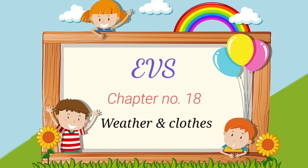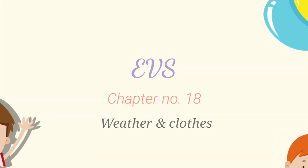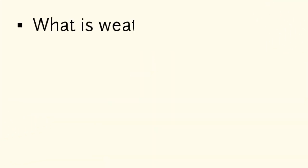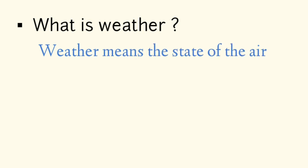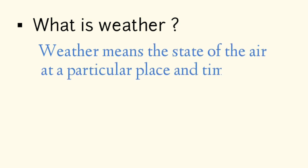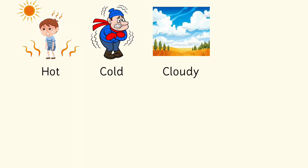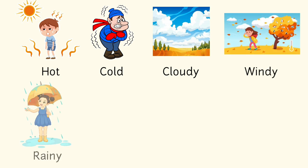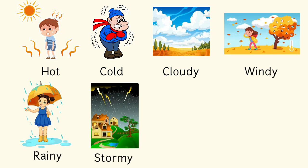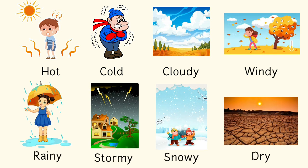Children, in this chapter we will understand about what is weather and types of weather. So, what is weather? Weather means the state of the air at a particular place and time. The state of weather can be hot, cold, cloudy, windy, rainy, stormy, snowy, dry, etc.